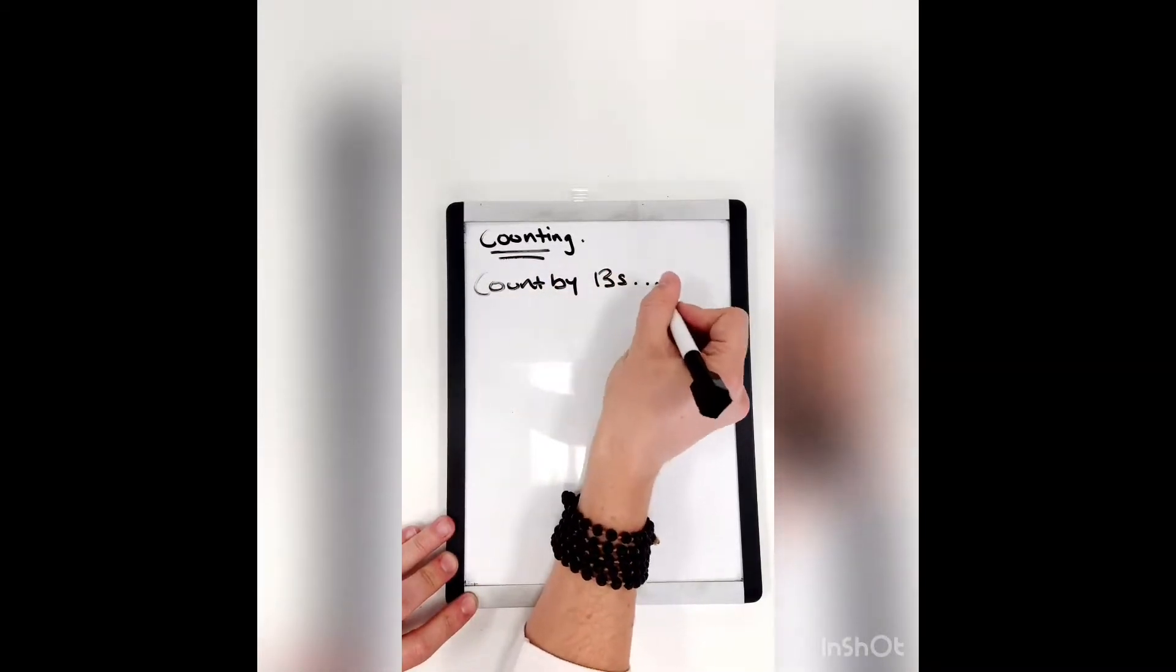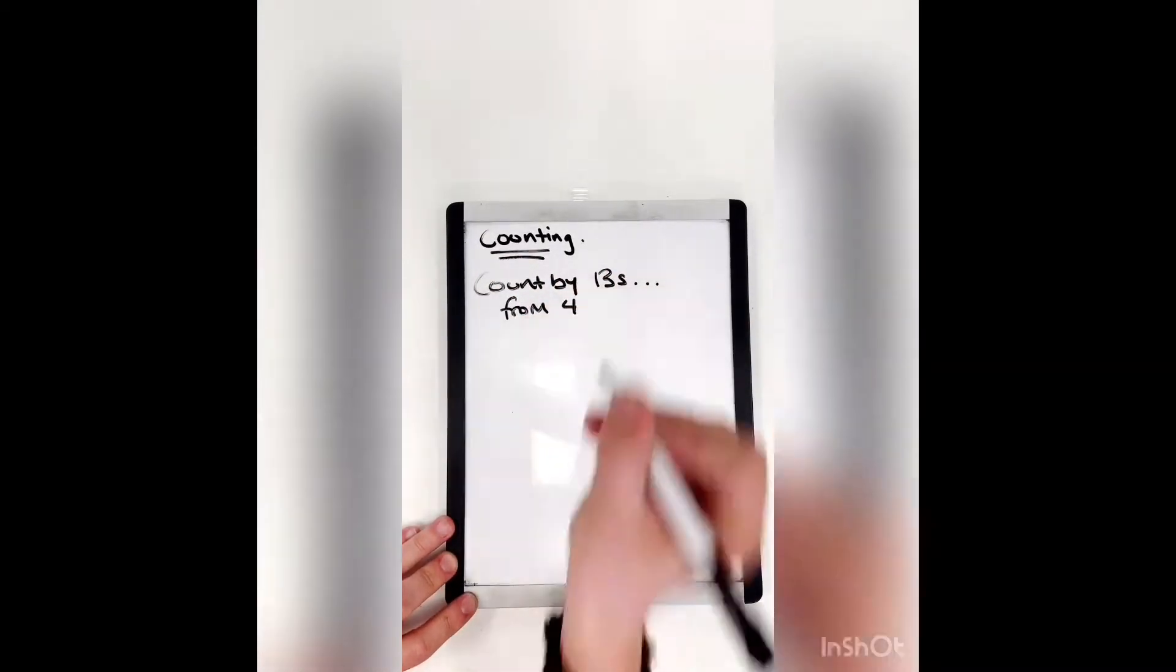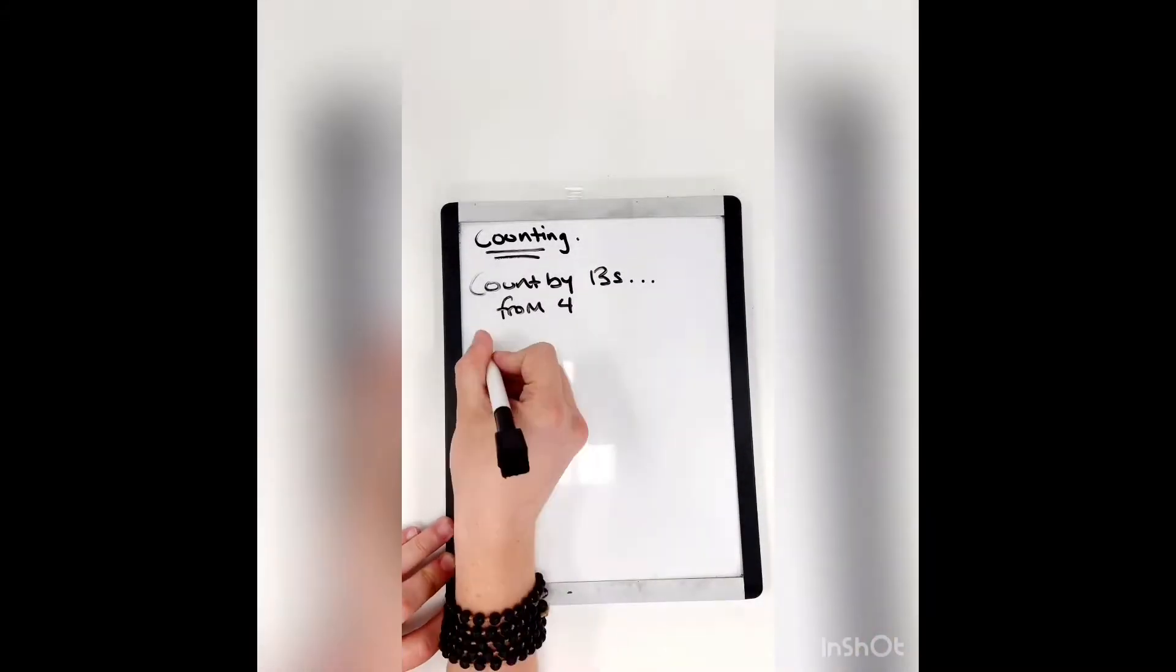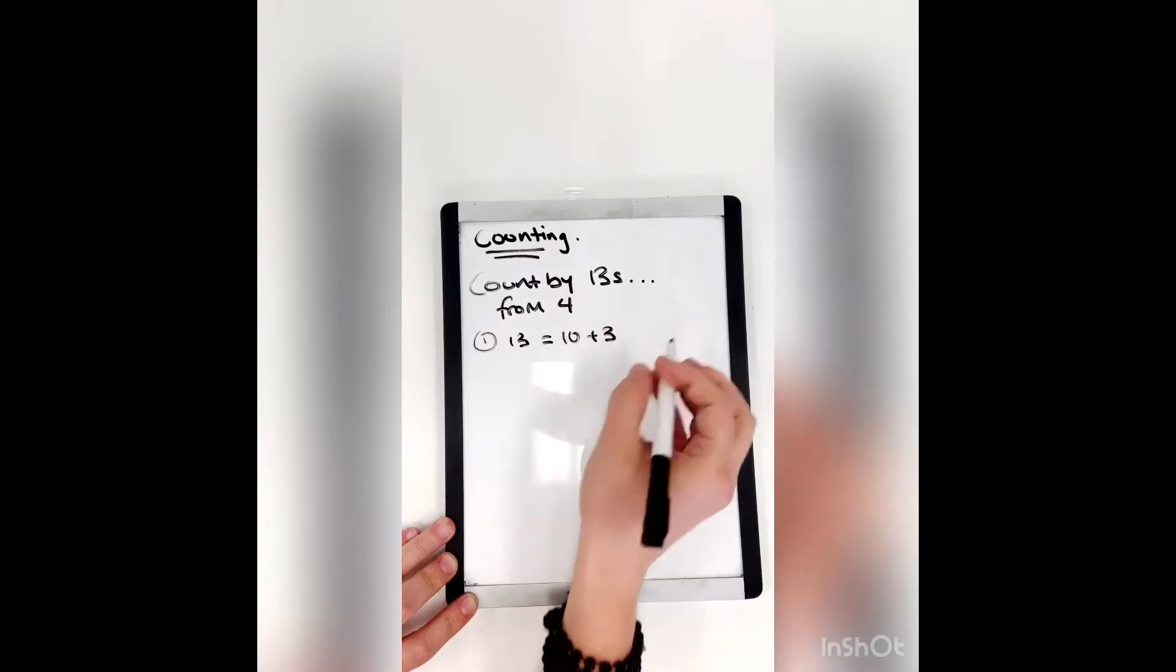Now let's try a bigger number. Let's count by thirteens. And we'll start at four. Four plus thirteen is, hmm, well, that's kind of harder than ten or three. Let's break it up.